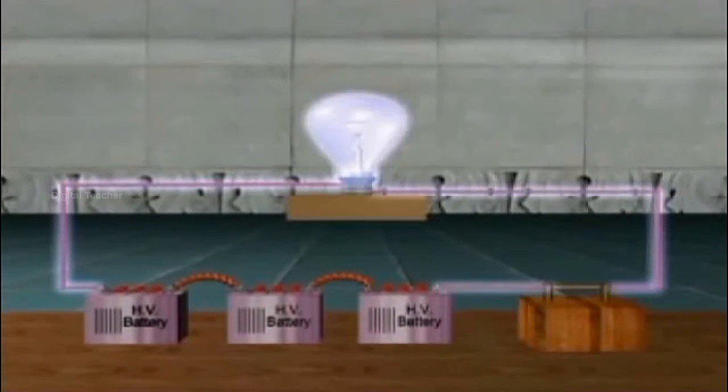This is because greater potential difference is obtained in the circuit when the cells are connected in series. When the negative terminal of a cell is connected to the positive terminal of another cell, then these cells are said to be in series.